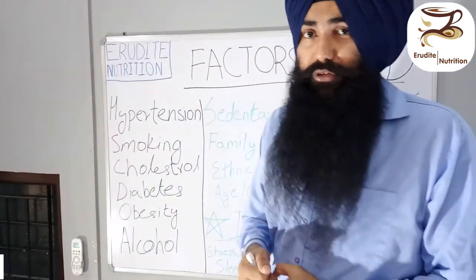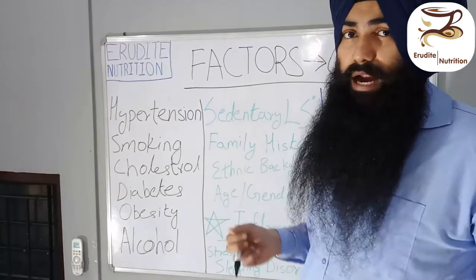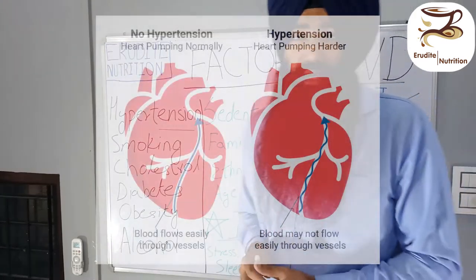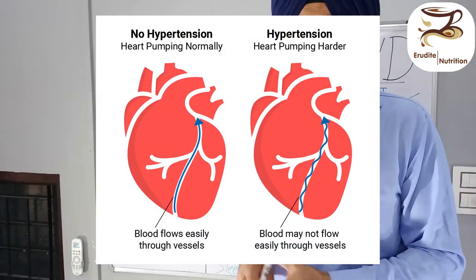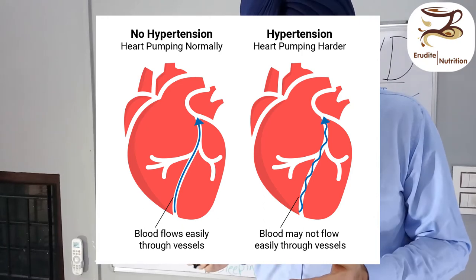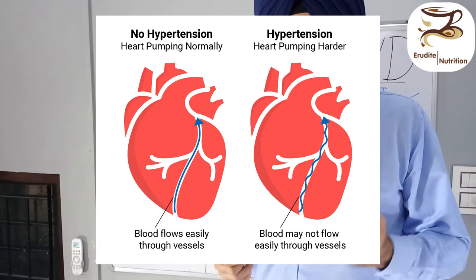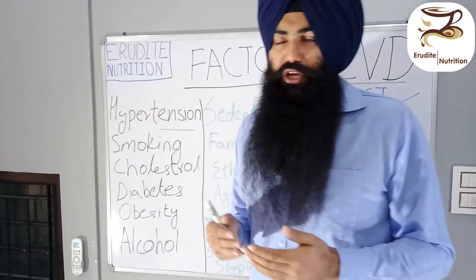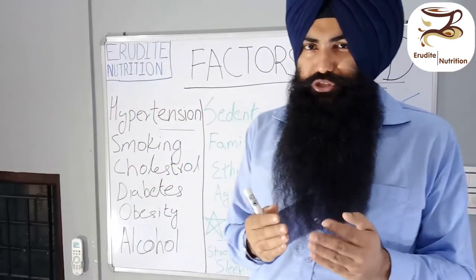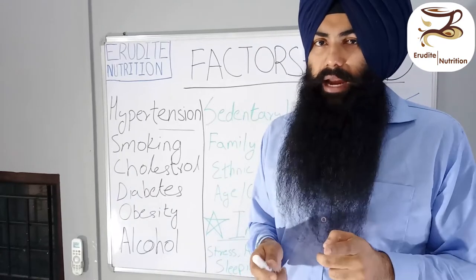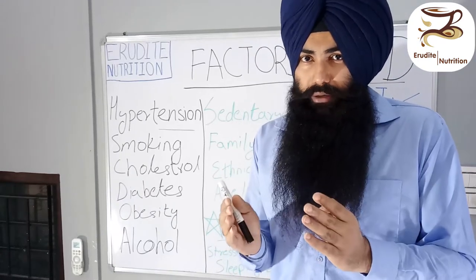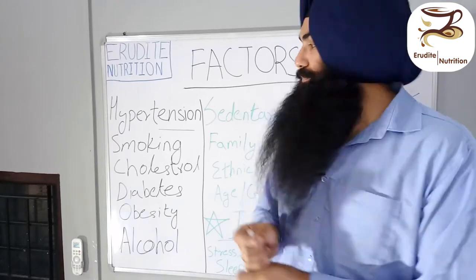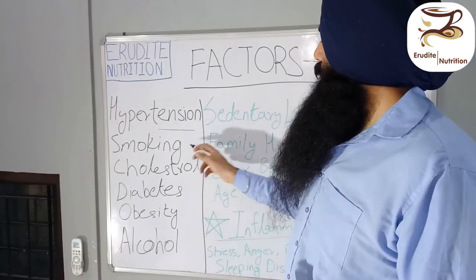The first factor is hypertension. Hypertension is one of the leading causes of cardiovascular diseases, whether it be a stroke or a heart attack. If you are suffering from hypertension and taking regular medicine, you need to change your lifestyle and diet so that we can address hypertension naturally, without the help of drugs.